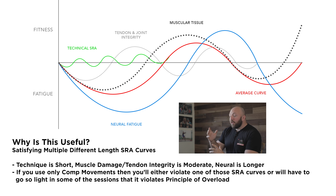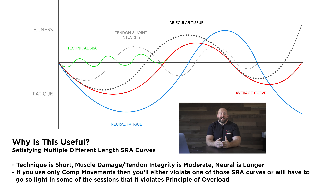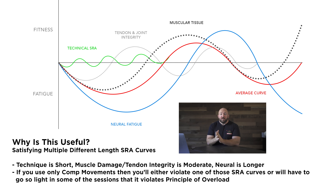Utilizing variation allows us to manipulate the length of those SRA curves so we don't get too far in the hole on neural SRA, tendon and joint integrity SRA, or muscular SRA — while not neglecting technical SRA, which is a shorter curve. If you're only using competition movements, you're going to violate one of those SRA curves. You'll either go so light that you violate the principle of overload, or train so infrequently that your technical SRA falls off.